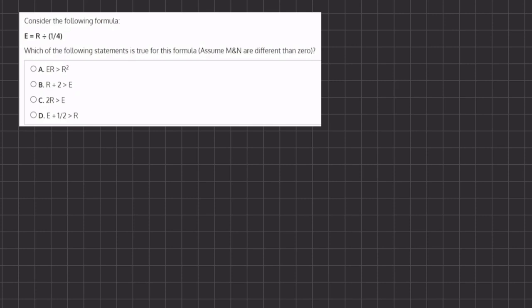In this problem we are given a formula and we want to see which of the following statements is true. Let's take a look at our E which equals R divided by 1/4. Remember when we divide fractions we turn this division sign into multiplication and multiply by the reciprocal of this fraction. The reciprocal is 4 over 1, which is just 4, so E equals R times 4, which gives us 4R.